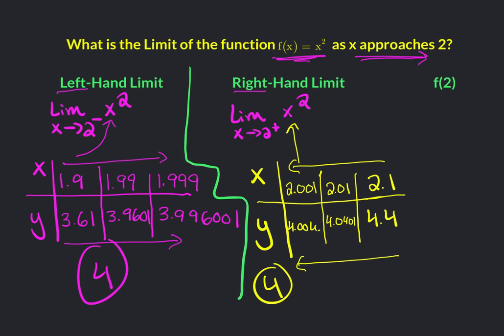Well, this seems like common sense, right? Of course it's going to approach 4 from the left and from the right. And if you look here, what is the function value at 2? Well, 2 squared is 4.